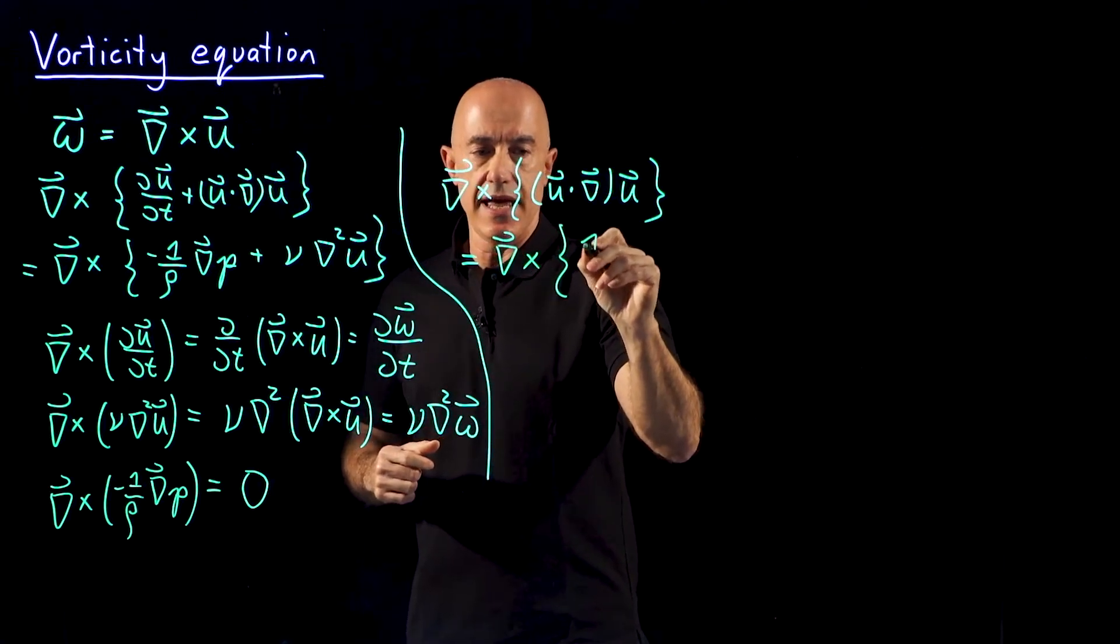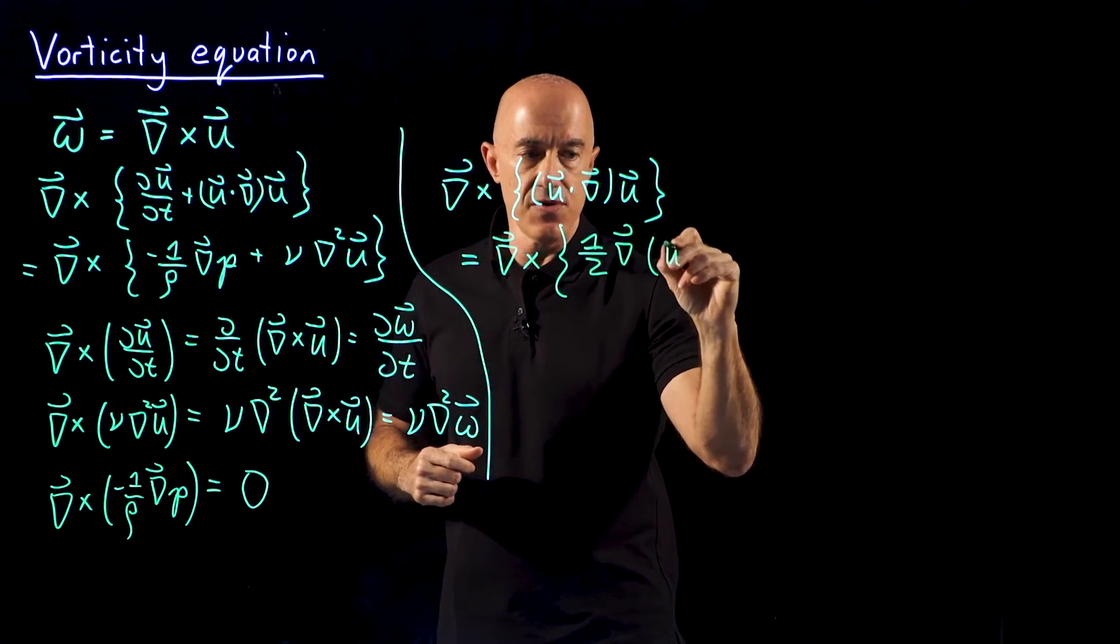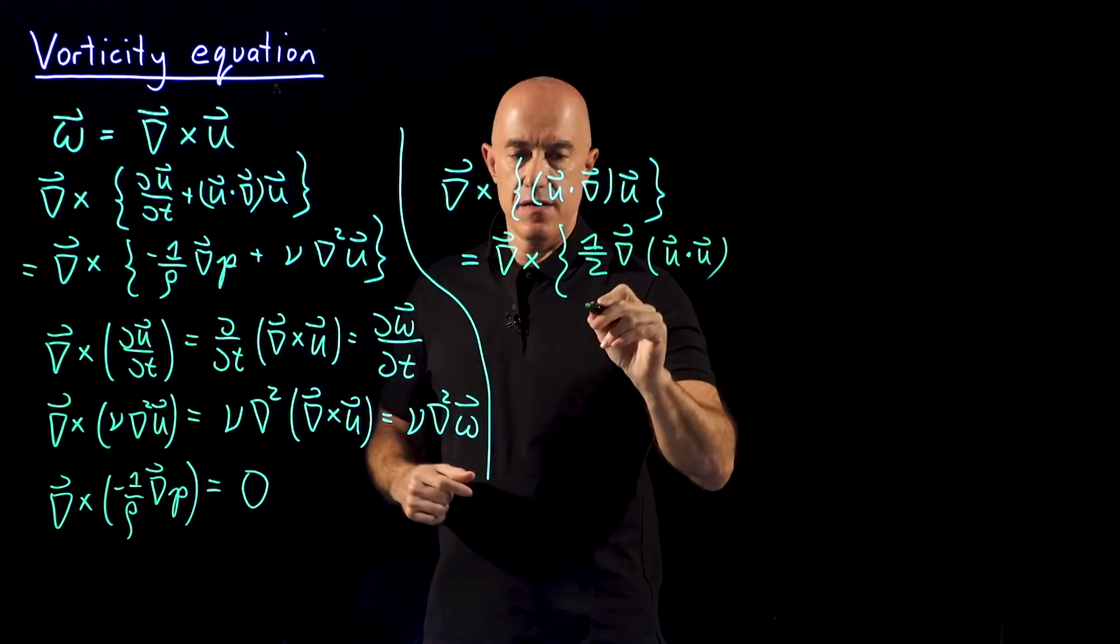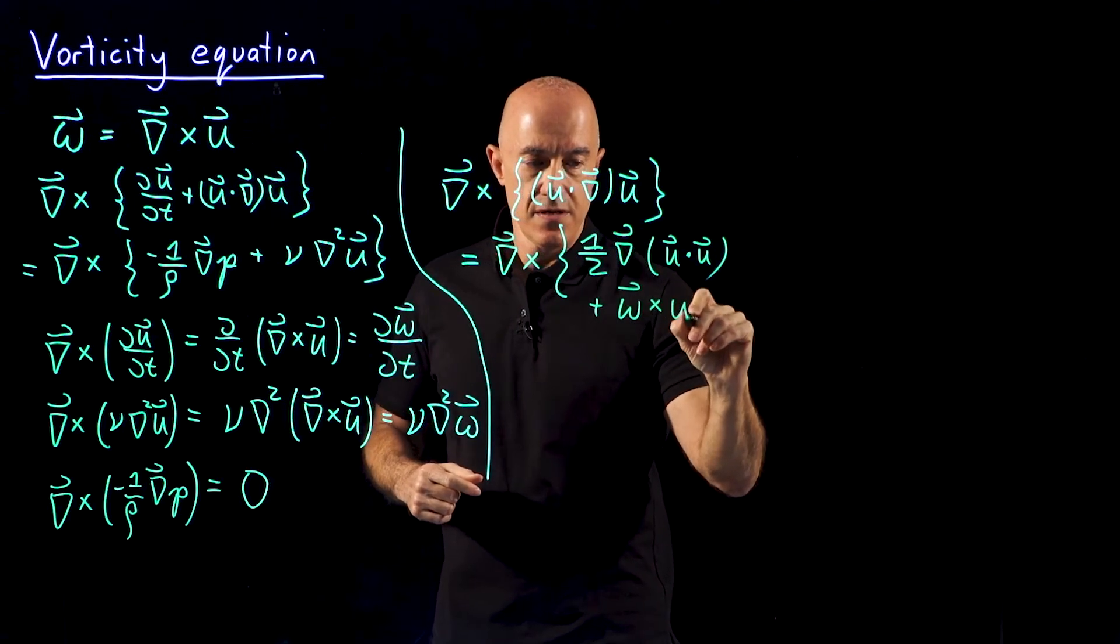This is one half the gradient of u dot u, which is a scalar, right? Plus the vorticity cross u.